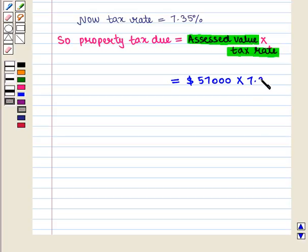Now this can be written as $57,000 into 7.35 upon 100, and this is equal to $570 into 7.35, that is $4,189.50.